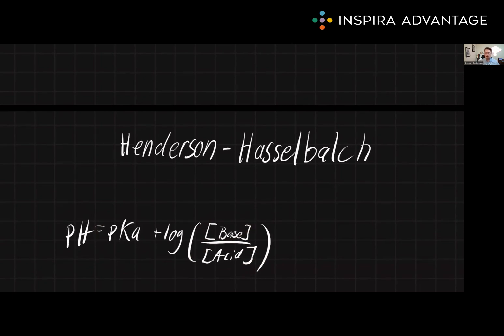But what does all of this mean? Well, the pKa is a measure of the strength of a weak acid. The lower the pKa, the stronger the acid. The ratio of base to acid in the equation tells us how much of the weak acid has been deprotonated, or turned into its conjugate base. And that's some verbiage you want to become very familiar with.